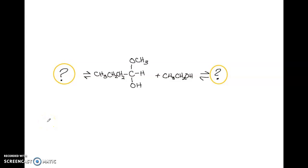Let's look at solving this problem where we want to identify any missing pieces of information. We have what looks like maybe a two-step reaction because we have something in a reversible reaction with this.